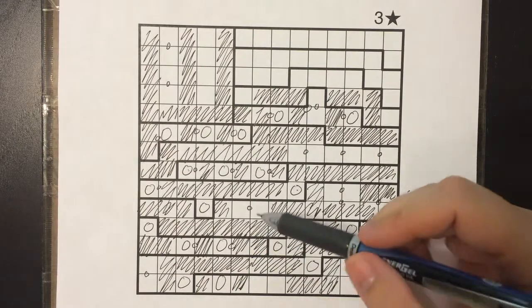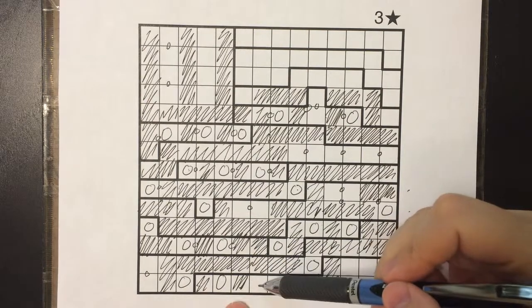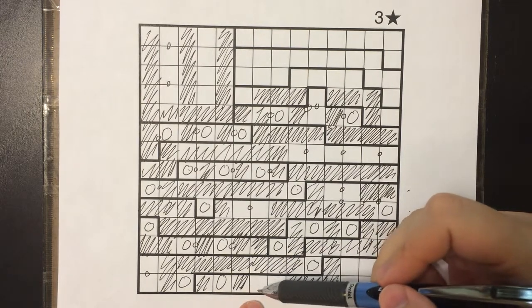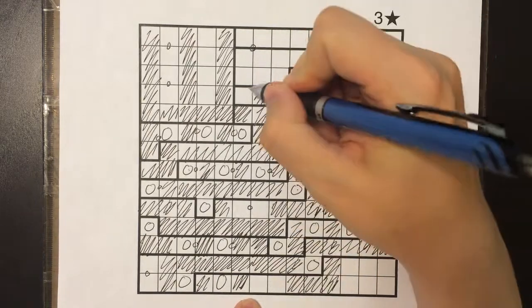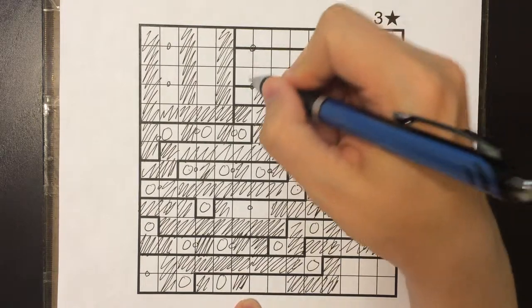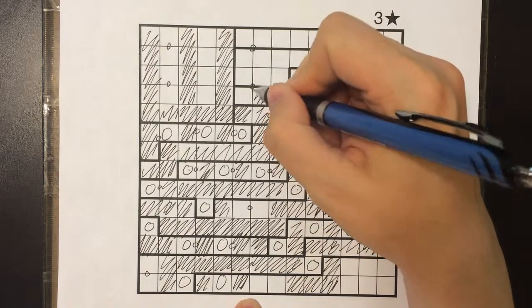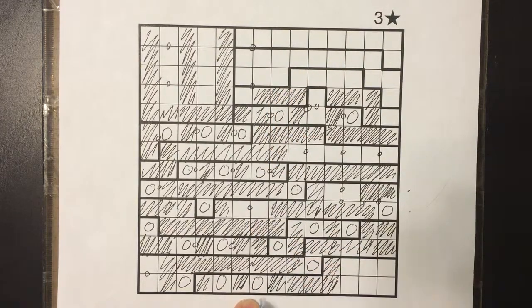We're now into column six and seven, trying to do some of the same math. Column six and seven collectively need six stars. Right now we have one, two, three placed. Knowing about 2x2 squares, there can be at most one star in these four cells and at most one in these four cells. We now have one, two, three, four, five tentatively placed. The sixth star has to be there.